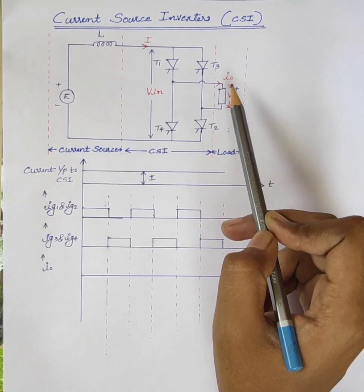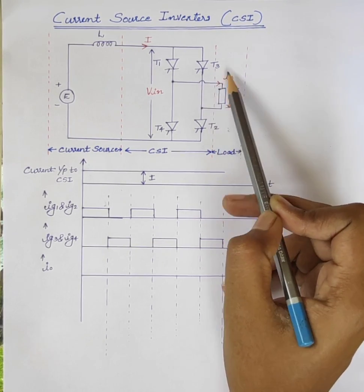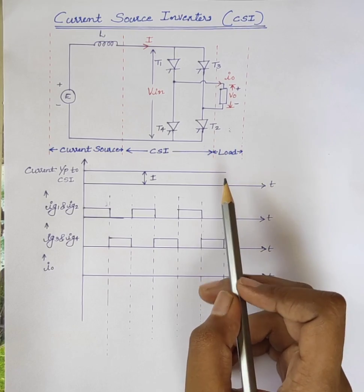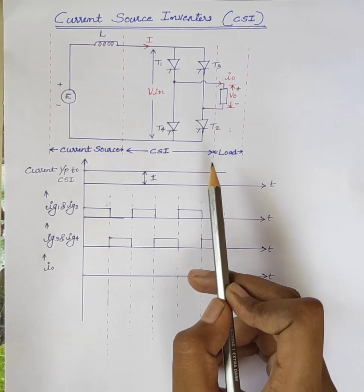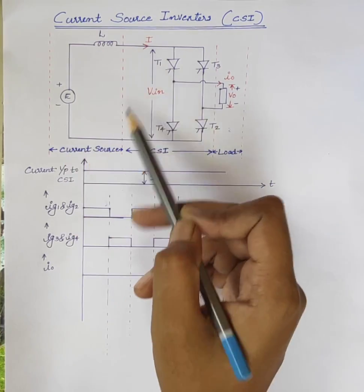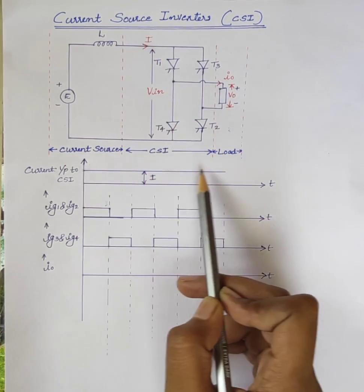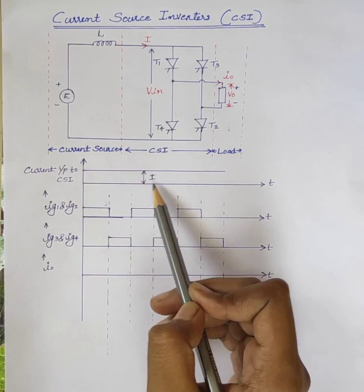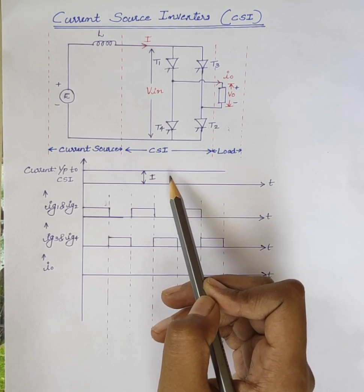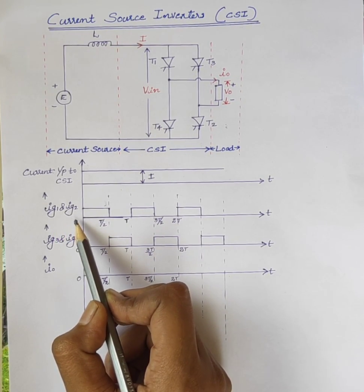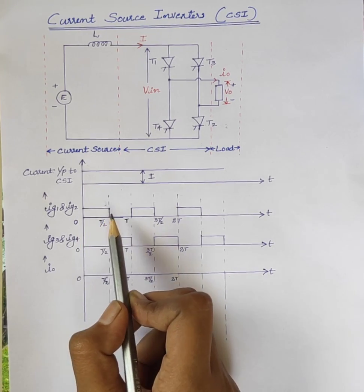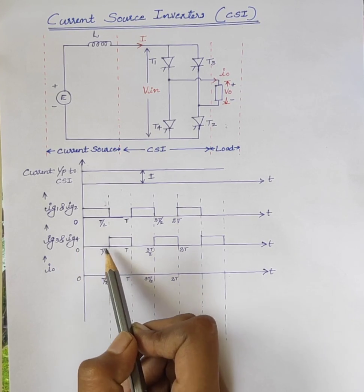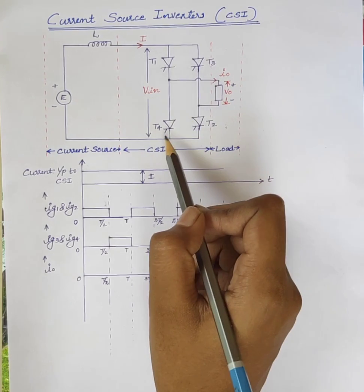The positive directions of load voltage and load current are indicated in the circuit. Next are the waveforms of current source inverter. In current source inverter, the input current is constant. This is the current input to the current source inverter and the magnitude of input current is I. Ig1 and Ig2 are the firing pulses to thyristors T1 and T2. Ig3 and Ig4 are the firing pulses to thyristors T3 and T4.